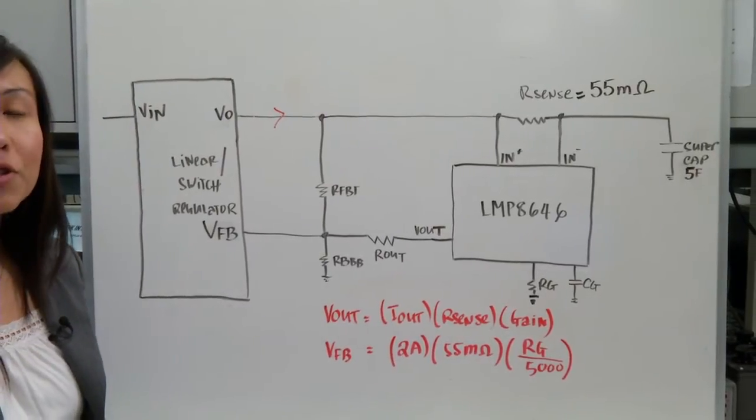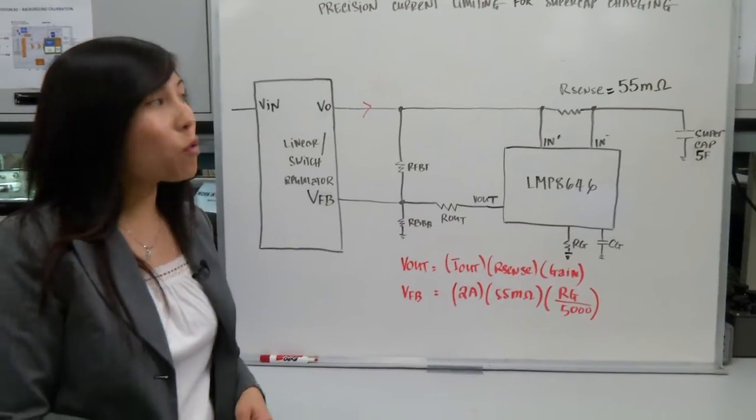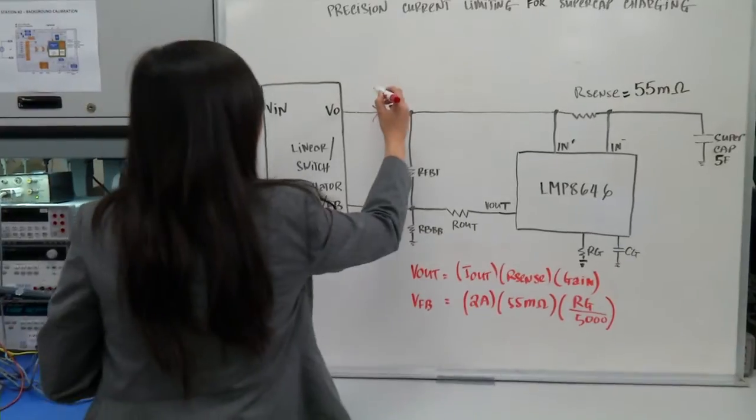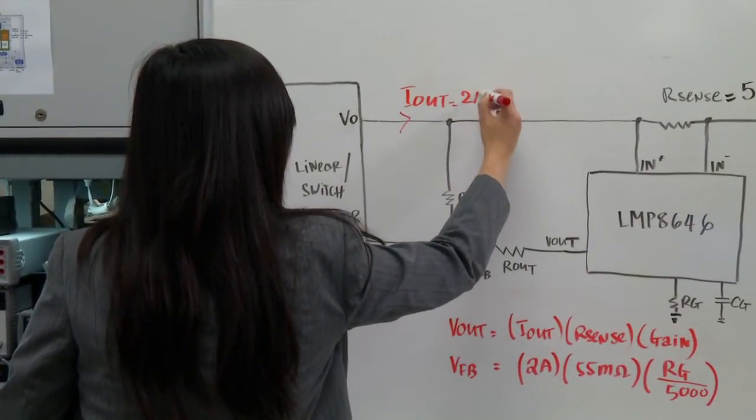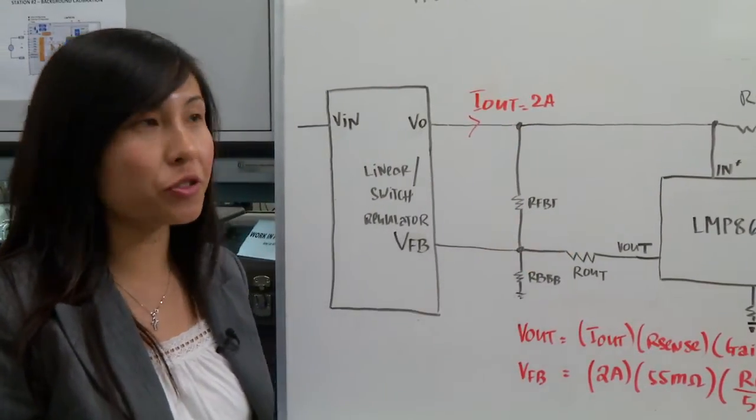Let's say the supercapacitor can only handle a maximum current of 2.1 amps. So we want to give the output current, the charging current, a little bit off the 2.1 amps. So we will choose 2 amps to charge the supercapacitor.